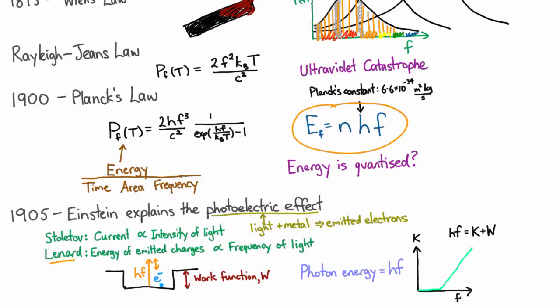So Leonard's initial exploration that showed that the energy of the emitted charges was proportional to the frequency of the light isn't quite what Einstein's theory predicts. Einstein's theory predicts this extra kink in the graph. But perhaps the experiments hadn't been done sensitively enough in those earlier tests by Leonard.